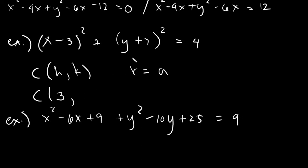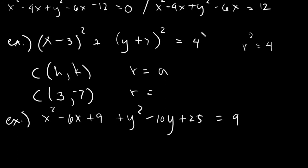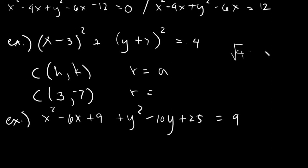The number beside y would be your k, and again it changes sign. R is this value on the right, but remember this is equivalent to r squared. So in getting r, you just simply have to get the square root. Take the square root of 4 and the answer is 2. So r equals 2. It's very easy to find the center and radius if you have the equation already in standard form.